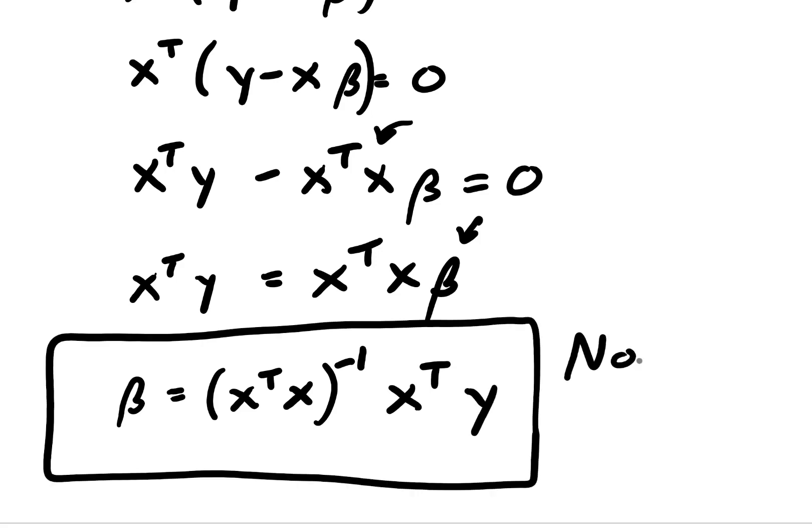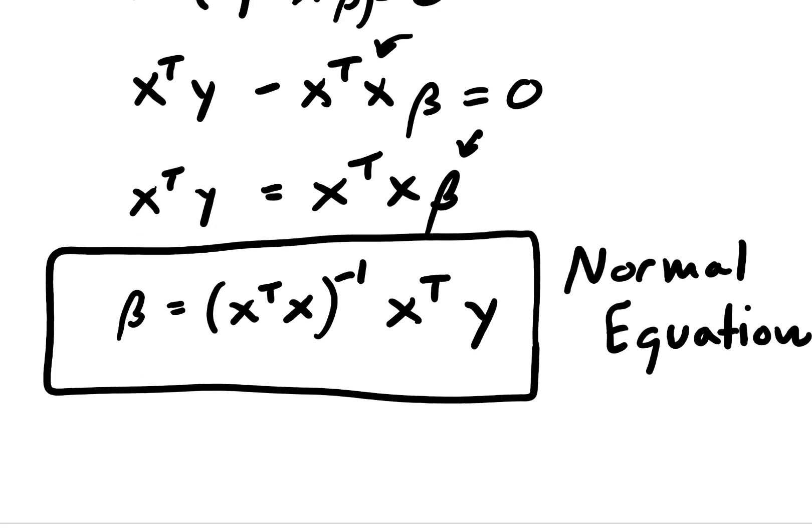So then we can use this normal equation to solve our regression problem directly, because we know what x is, our feature variables, our independent variable, and we know what y is, that's our observed value, or the dependent variable. So I'm planning on showing you how to use Python to solve your regression problem using the normal equation in a future video. If you found this video helpful, please hit like or subscribe. And thanks for watching.